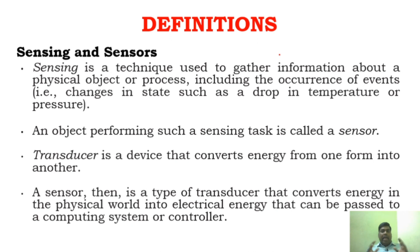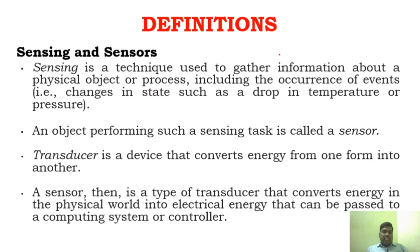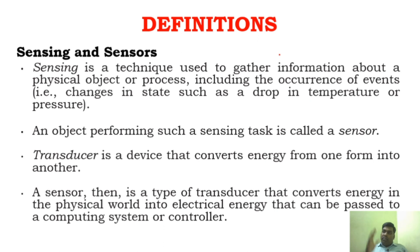Why are they called remote sensors? Because we are not touching anything — we are just gathering information by seeing, hearing, or smelling. Similarly, sensors are objects which gather information about a physical quantity, a physical event, or even the occurrence of an event. We can also call a sensor a transducer, because even sensor is one form of a transducer.